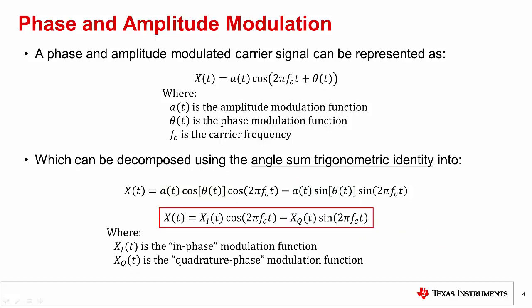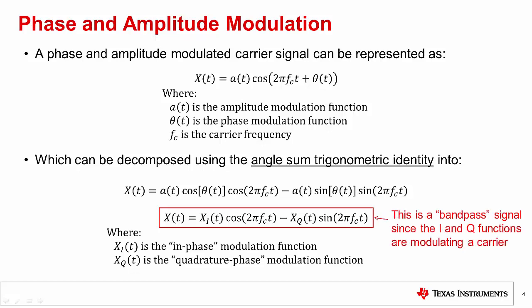Now we have this form of x(t), which represents our real-world transmitted signal. Both I and Q modulation functions are real-valued functions, meaning they do not contain an imaginary component, and therefore x(t) is a real-valued function, as required for real-world transmission. However, this function can actually represent both real and complex modulation. This transmitted signal is often referred to as a bandpass signal, since it occupies some bandwidth at a carrier frequency — in other words, the I and Q functions modulate a carrier signal.